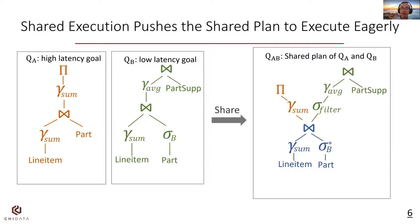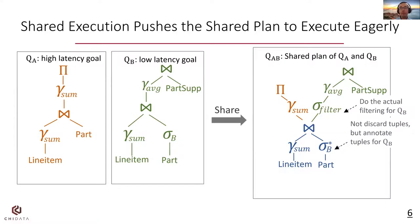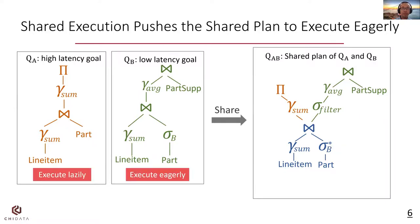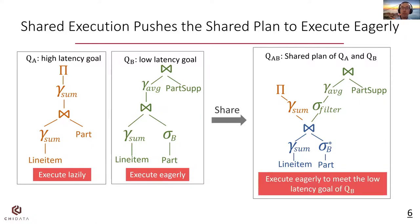Consider this example with QA and QB. They have two similar join plans, with QA owning a predicate sigma B that is different. Note that for the shared plan, the predicate sigma B* does not discard tuples but annotates tuples that belong to QB, with sigma performing the actual filtering for QB. If we execute the two queries separately, QA is executed lazily due to its high latency goal and QB does the opposite. If we share the two queries, we will execute the whole plan eagerly to meet the low latency goal of QB.